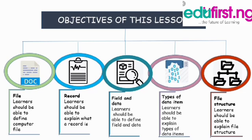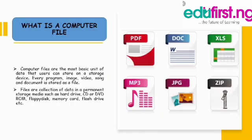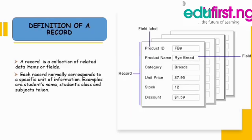Number five, to explain file structure. Now let's get started. What is a computer file? Computer files are the most basic units of data that users can store on a storage device — for example, your programs, images, videos, songs, and documents. Files are a collection of data in a permanent storage media such as your hard drive, CD, DVD, floppy disk, memory card, or flash drive.